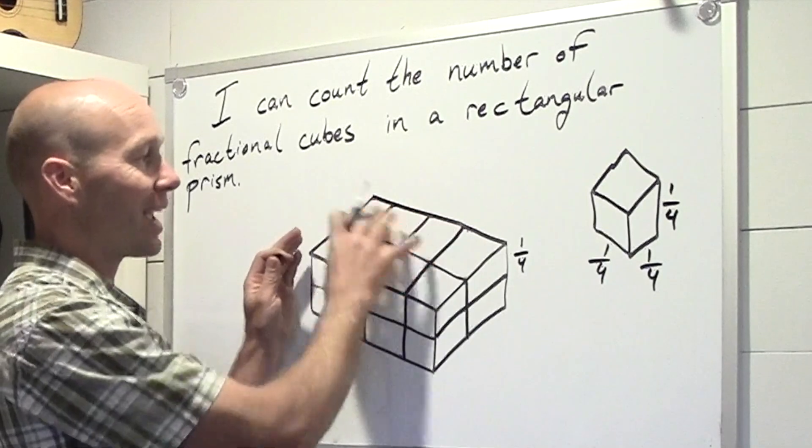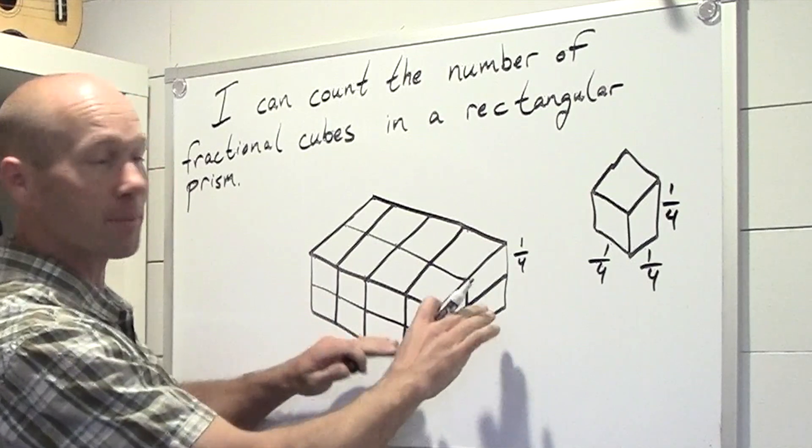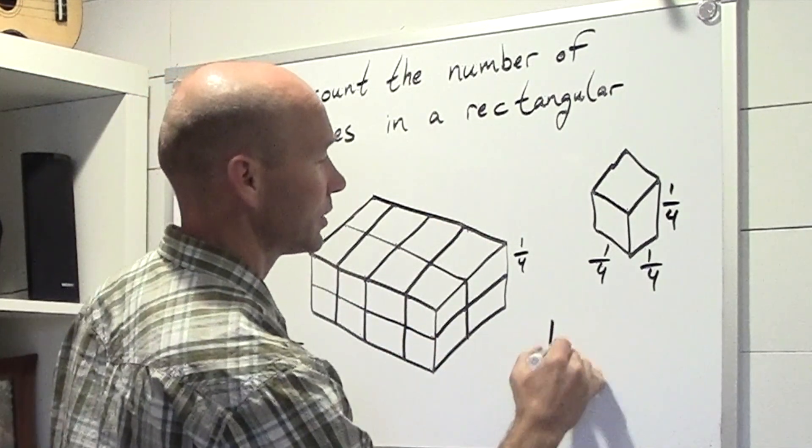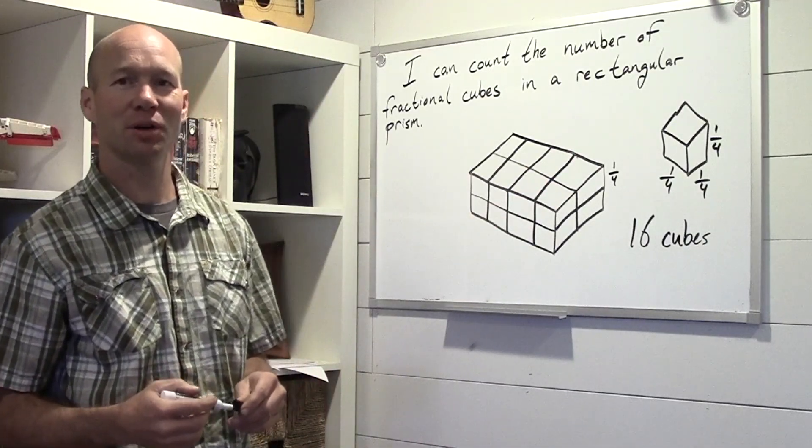Or we can just count them up. We have 8 on the top. And we know that since this is a rectangular prism, the bottom has another 8. So 8 plus 8, we have 16 cubes in this rectangular prism.